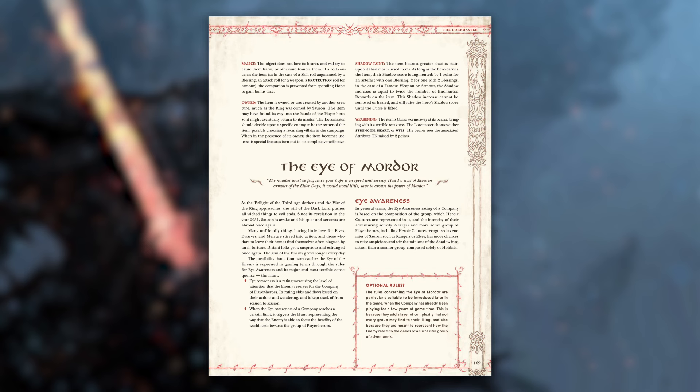Using a rating called Eye Awareness, the Loremaster will be able to track how much attention Sauron is spending on trying to find the players. This rating will ebb and flow over the course of the game, depending on a number of factors. When the Eye Awareness reaches a certain amount called the Hunt Threshold, it will trigger a special event called a Revelation Episode, as Sauron focuses the hostility of the world itself towards the heroes.